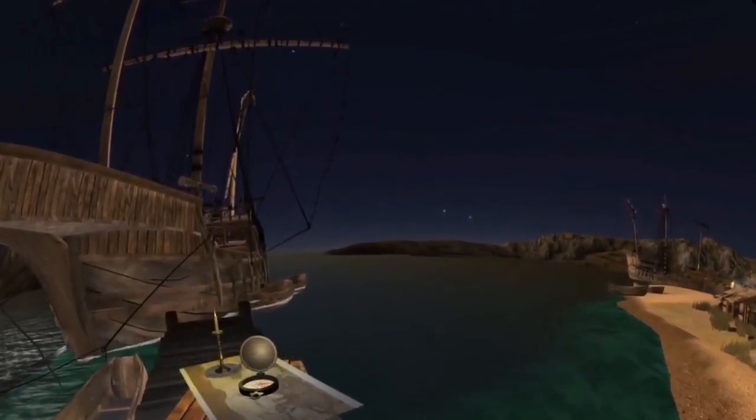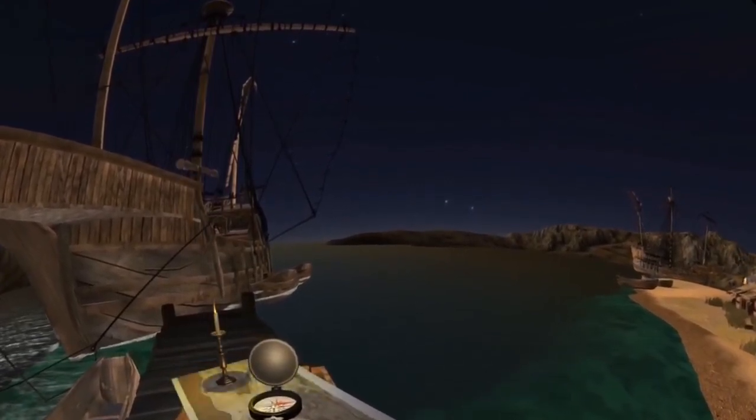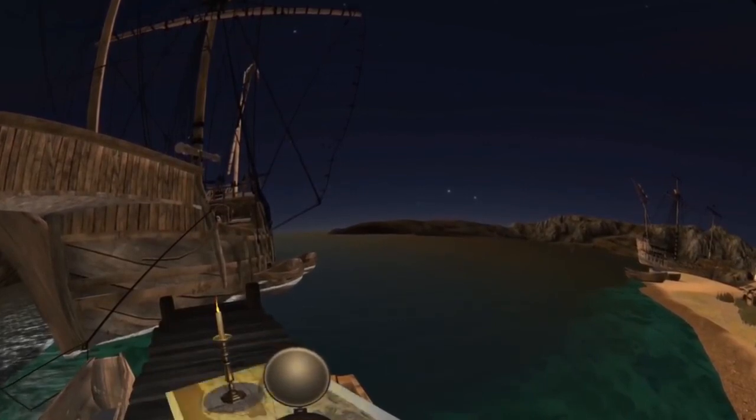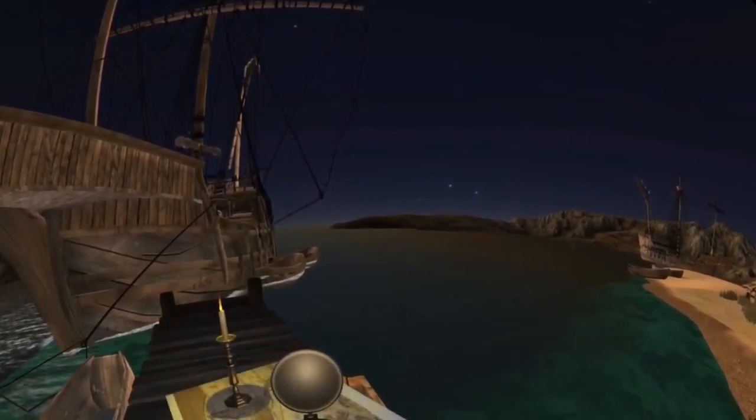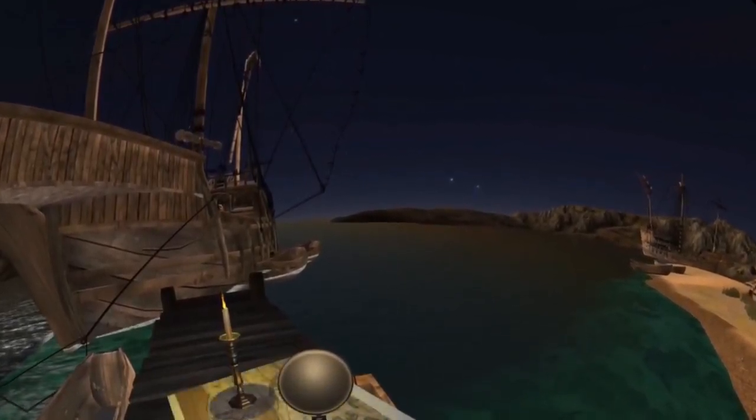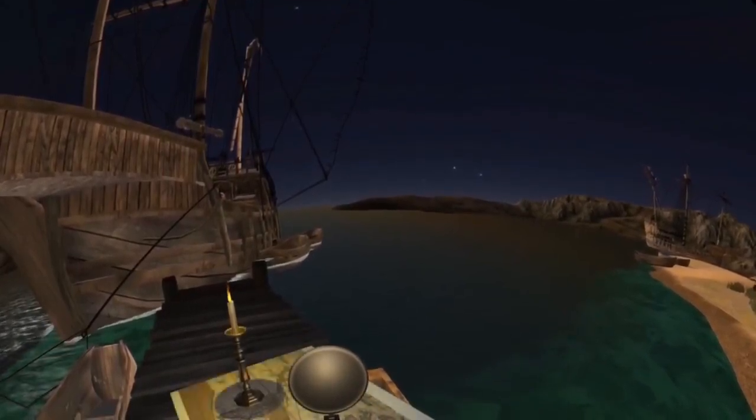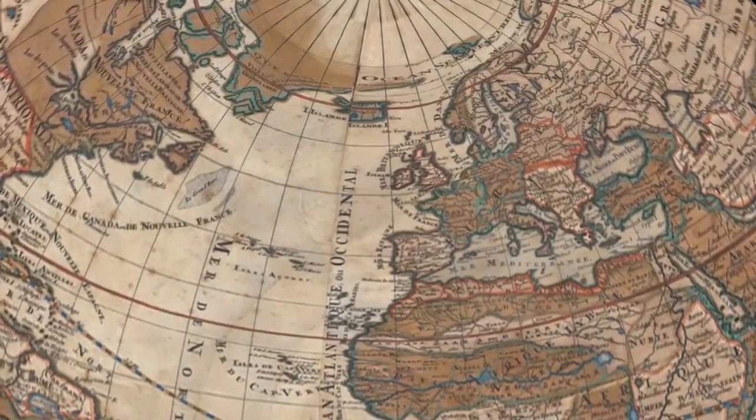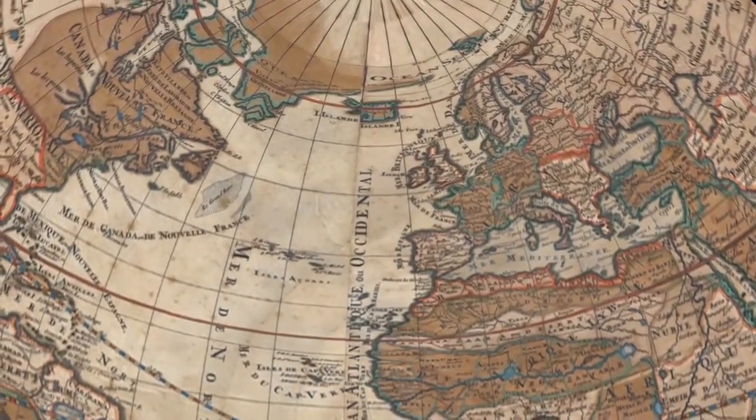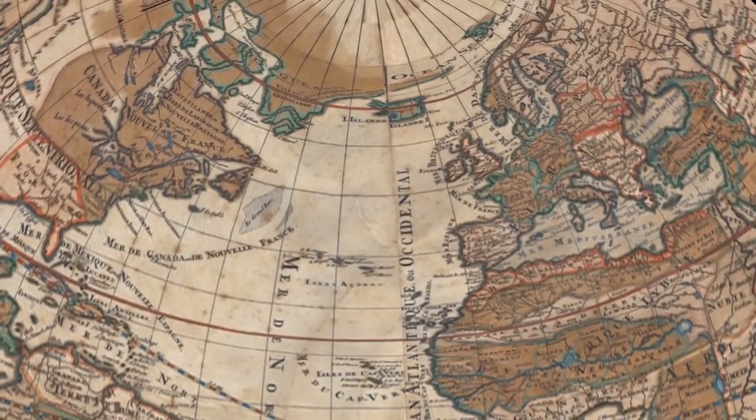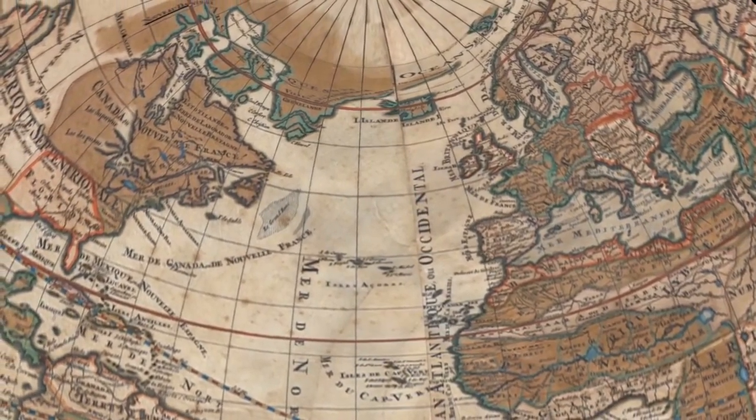But on cloudy nights, they needed another device to chart their course. The magnetic compass reached Western Europe in the early 13th century. With it, sailors could cross the planet's great oceans, discovering Earth's size and mapping its continents. Earth's uncharted lands became places on a map. Its coastlines defined a world far larger than early sailors had imagined.